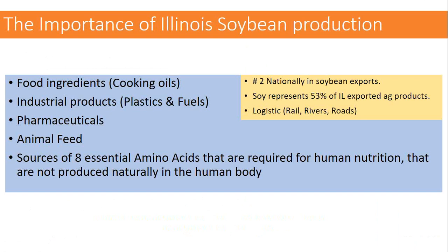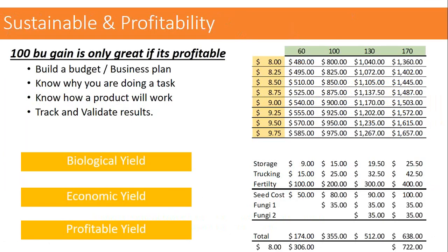There's going to be huge demand for soybean products moving forward, whether it be food ingredients, industrial products, pharmaceuticals, animal feeds, or human nutrition. Illinois soybeans rank number two from a national export standpoint. We've got a strong logistics system — rail, river, and roads — that other parts of the world can't match. So it's up to us to understand how to improve yield.